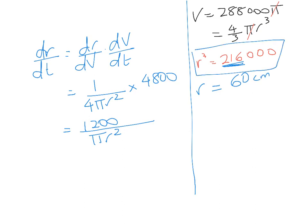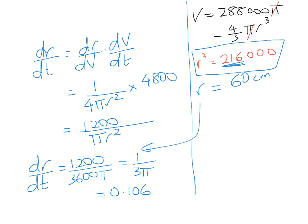We're going to substitute back in and we get dr by dt is equal to 1,200 over 3,600 pi, which works out to be 1 over 3 pi, and that equals 0.106 centimeters per second. As usual when you're doing a related rates problem, make sure your units match up. It's per unit of time, so per second, and we measure the radius in centimeters because it's a length.